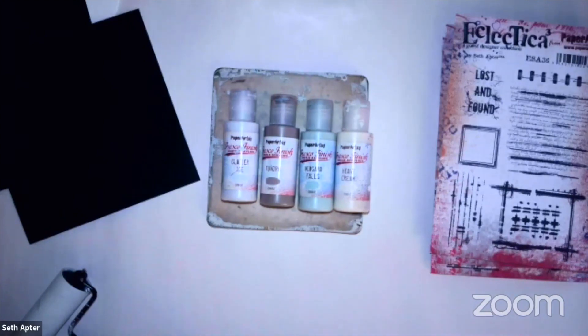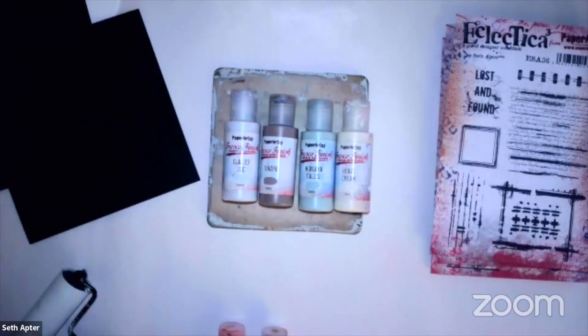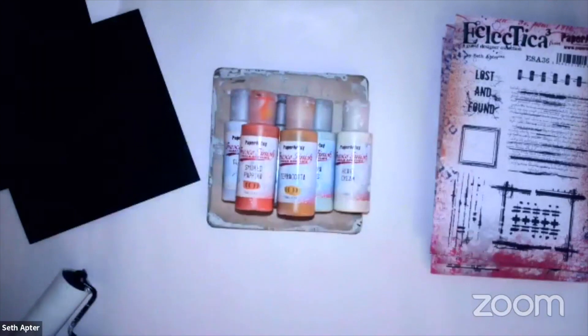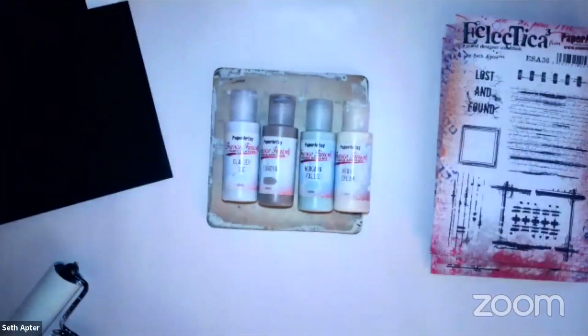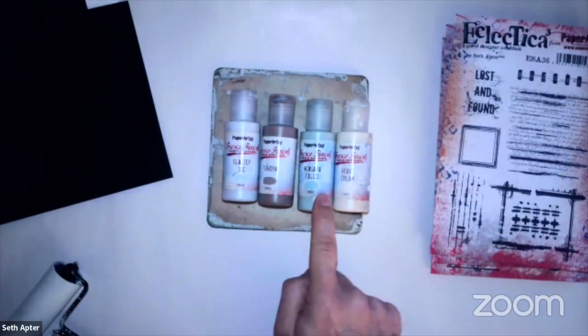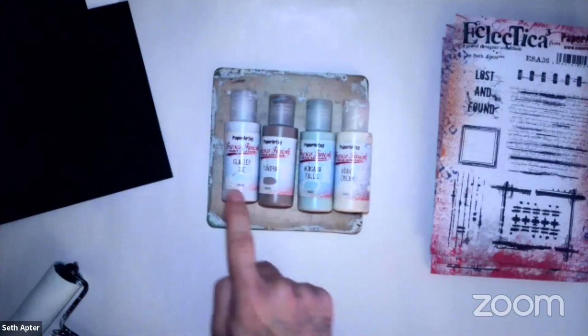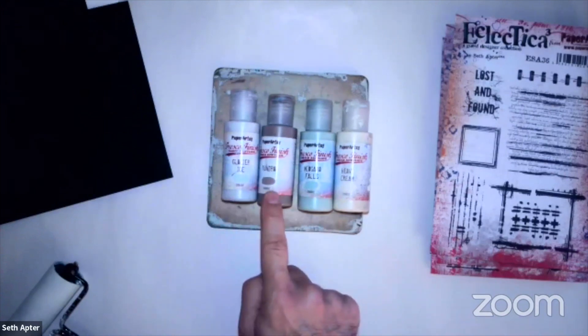That would actually be a great demo. But for now, we're going to kind of go with these. We're going to go with this base of cool tones and then to add some contrast, we're going to go with some warm tones. Also, the contrast will be between the dark black background and the lighter, opaque paints. I know people love to know the paint colors. So we're going to just say Glacier Ice, Tundra, Niagara Falls, Heavy Cream.